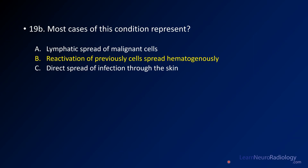Most of these cases represent reactivation of previous infections — you've had tuberculosis at a previous time in your life and then get reactivation, so it's a secondary phenomenon. If you had a malignancy, that would represent lymphatic spread. Most of the time skin infections don't extend deep like this, so you wouldn't typically have such severe lymphadenopathy from a skin infection.